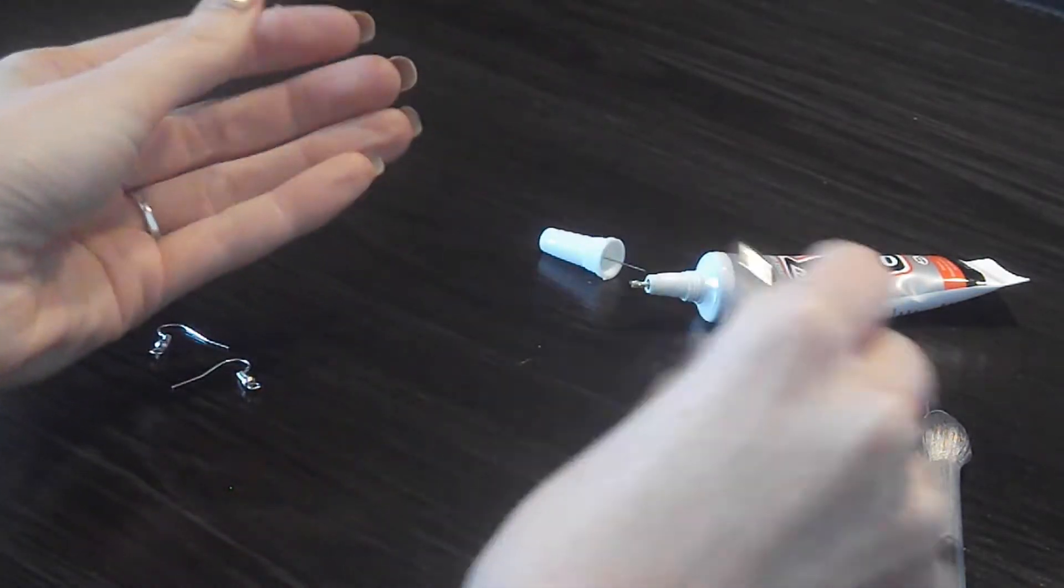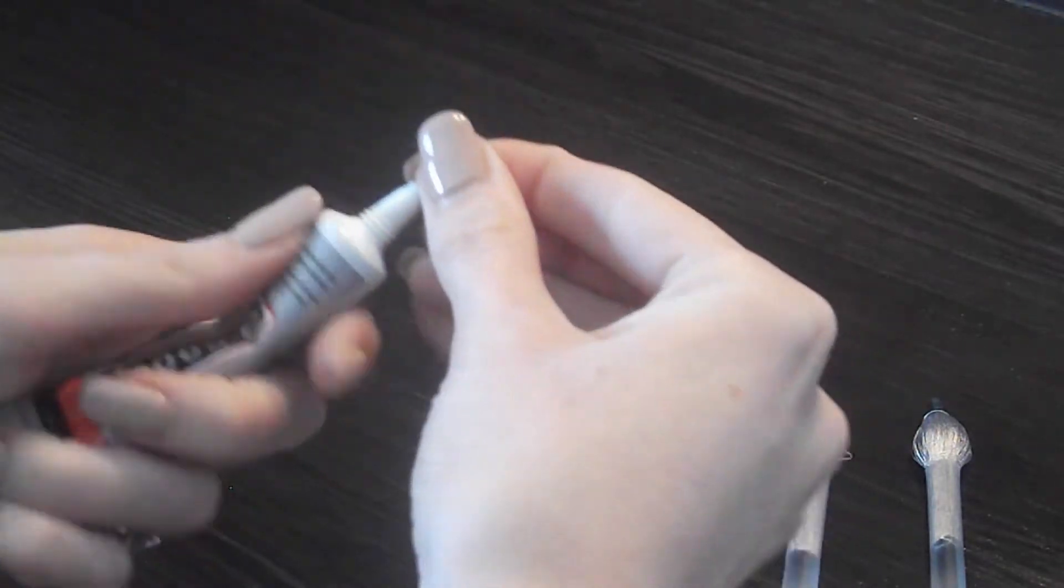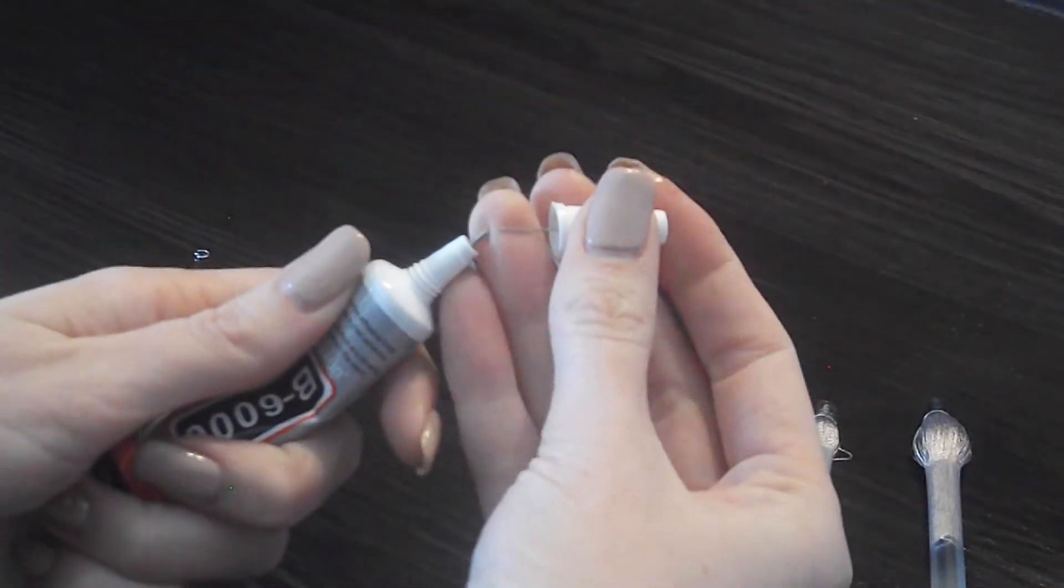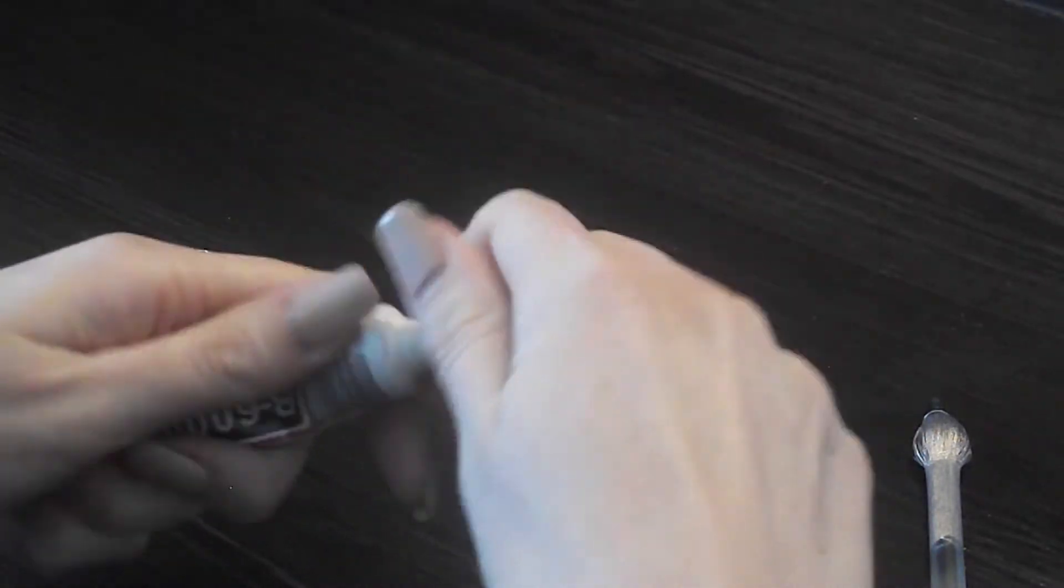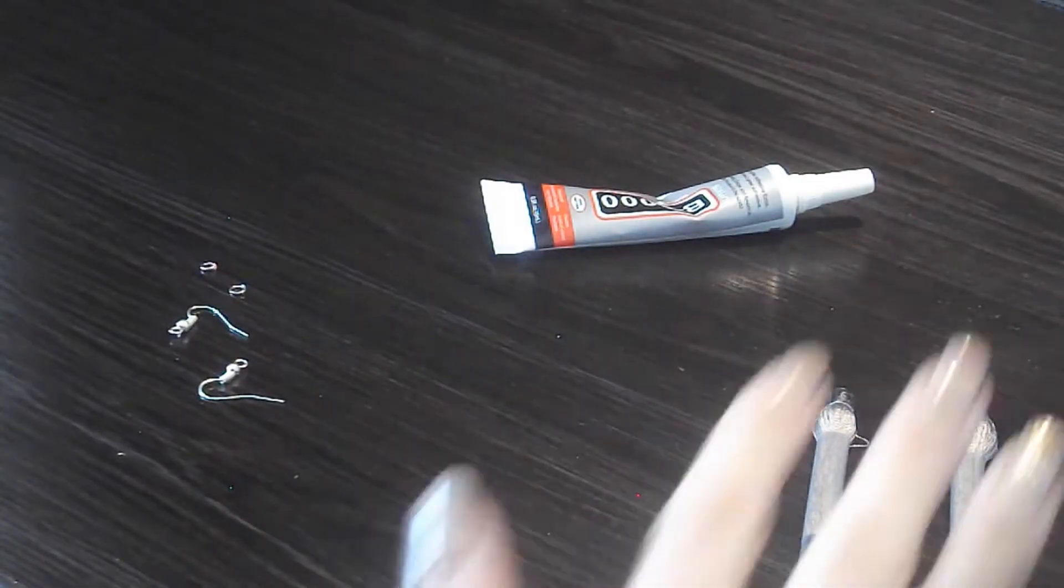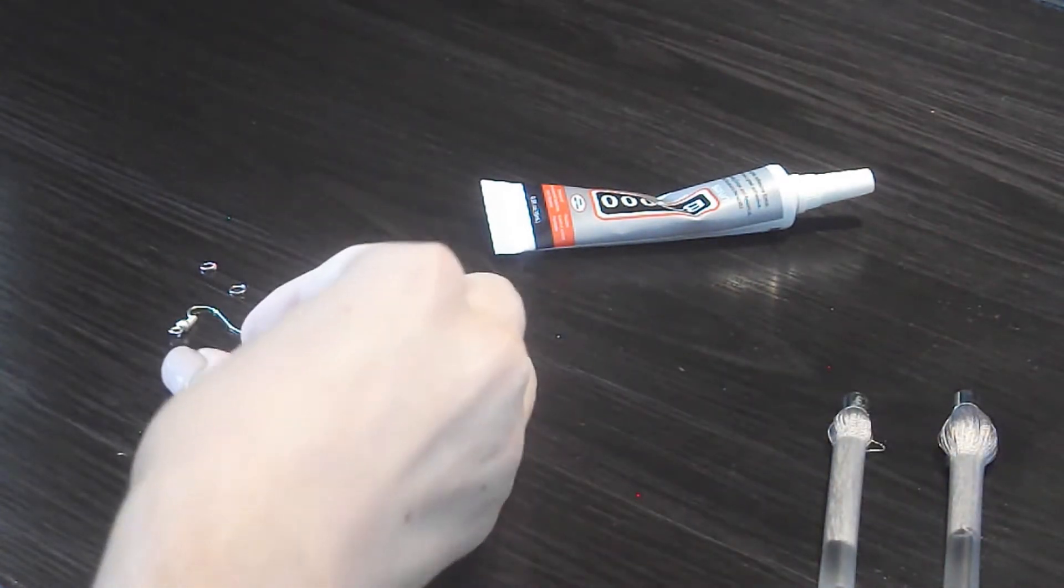And then there we go. Let's let it dry. Let me just clean off the glue because I don't want this to dry out. Okay, so while these are dry, let's move on to the eye hooks.